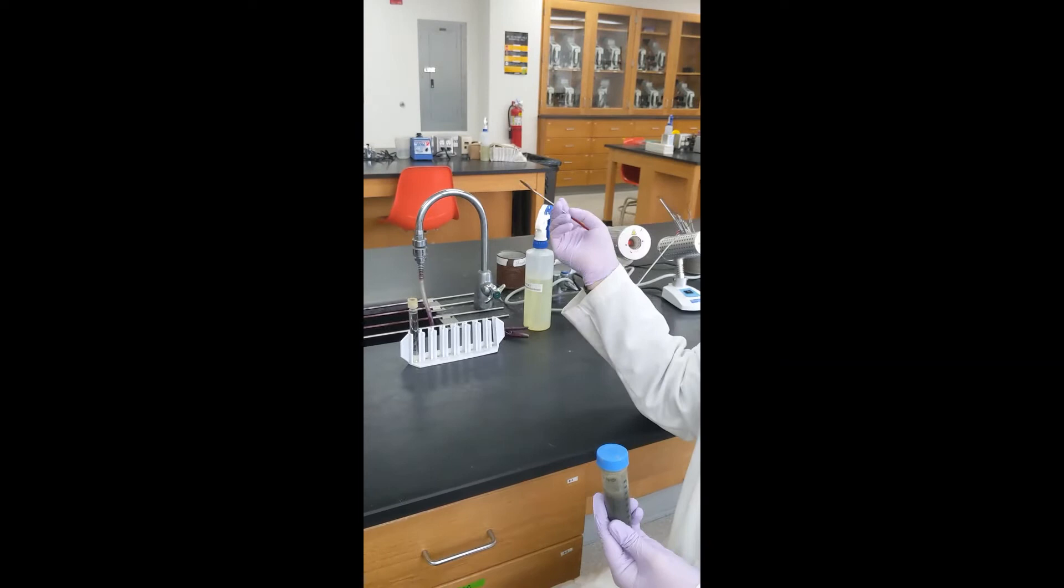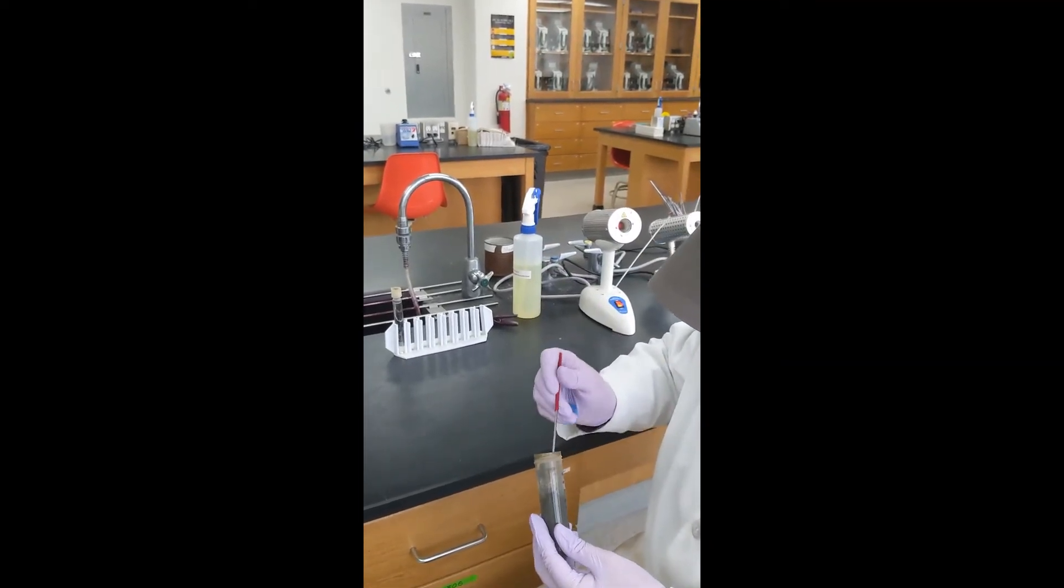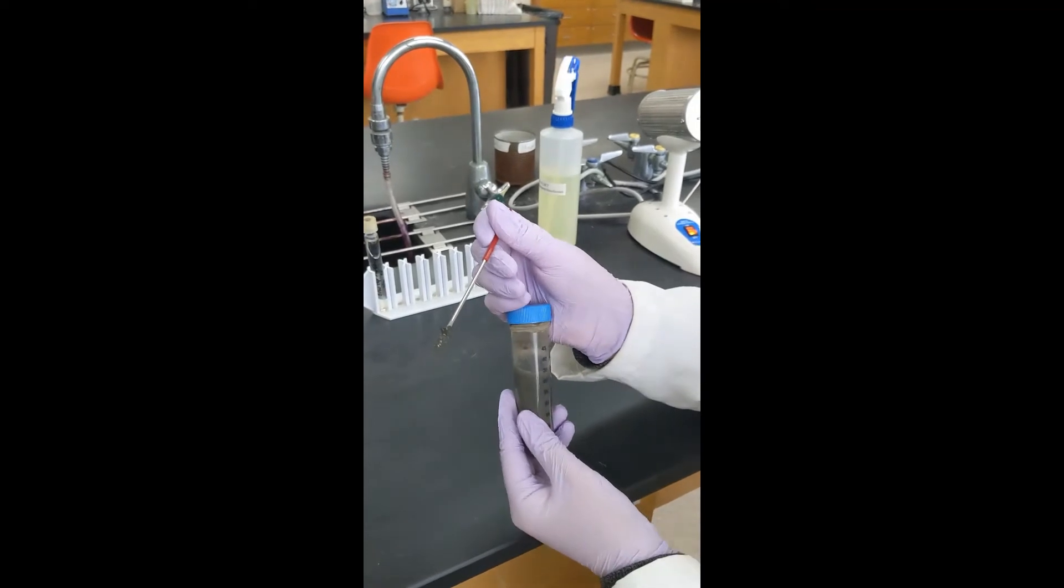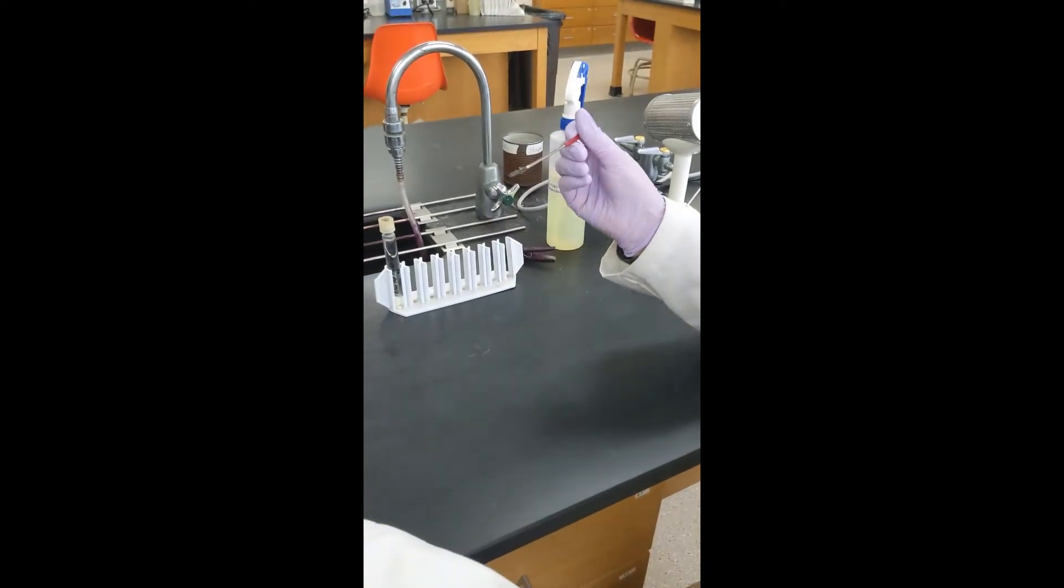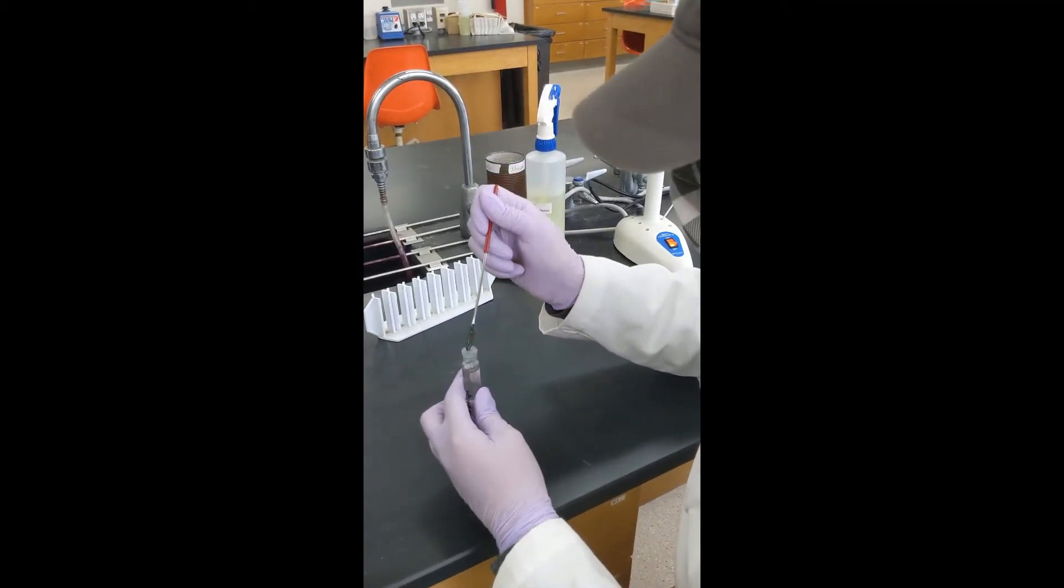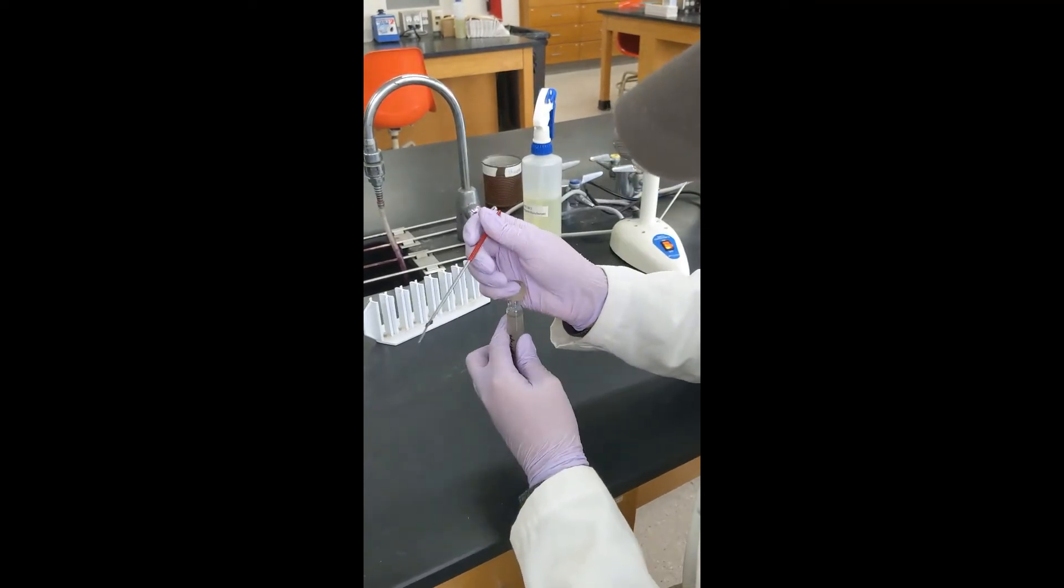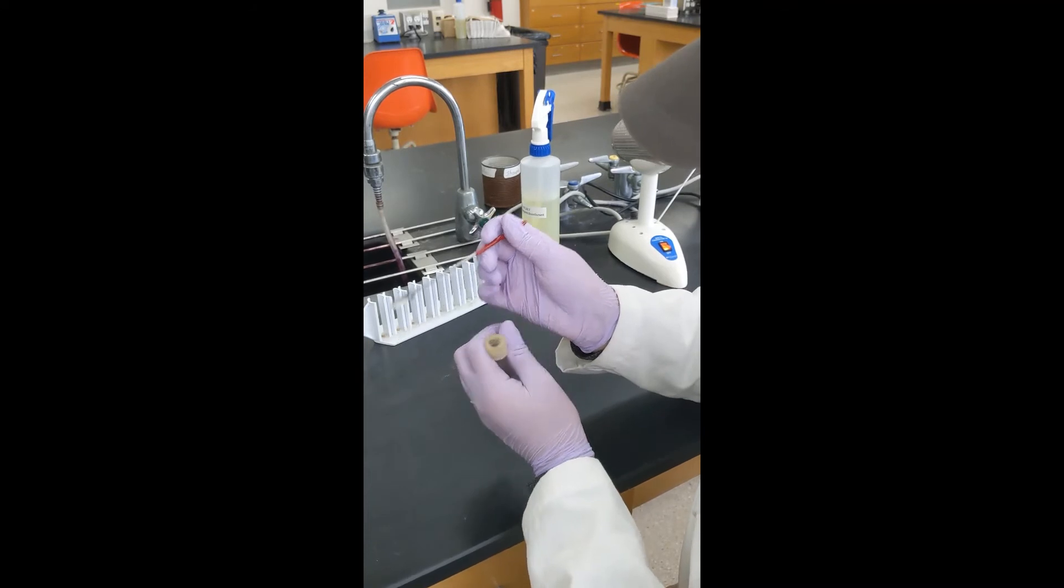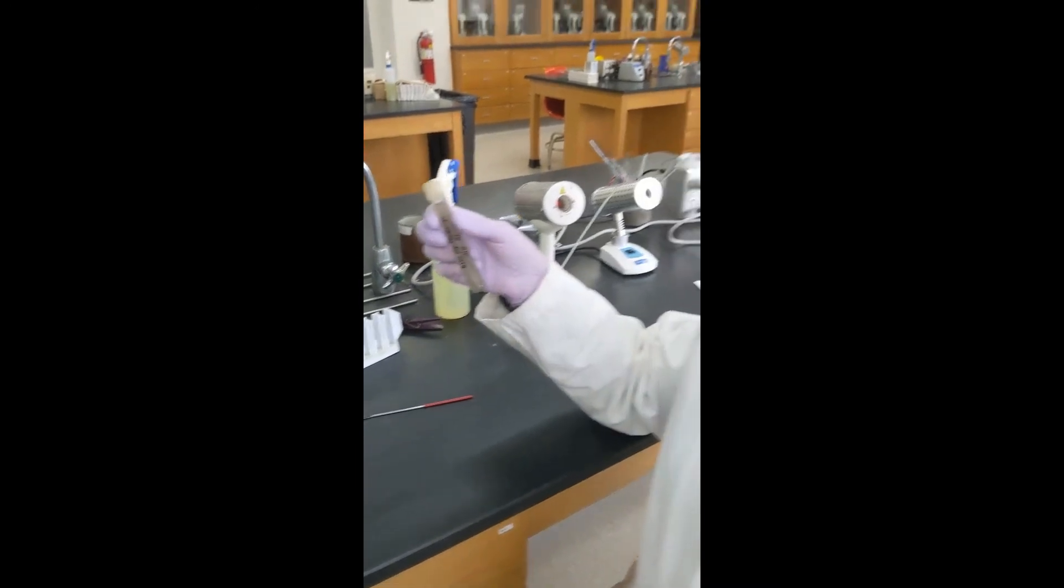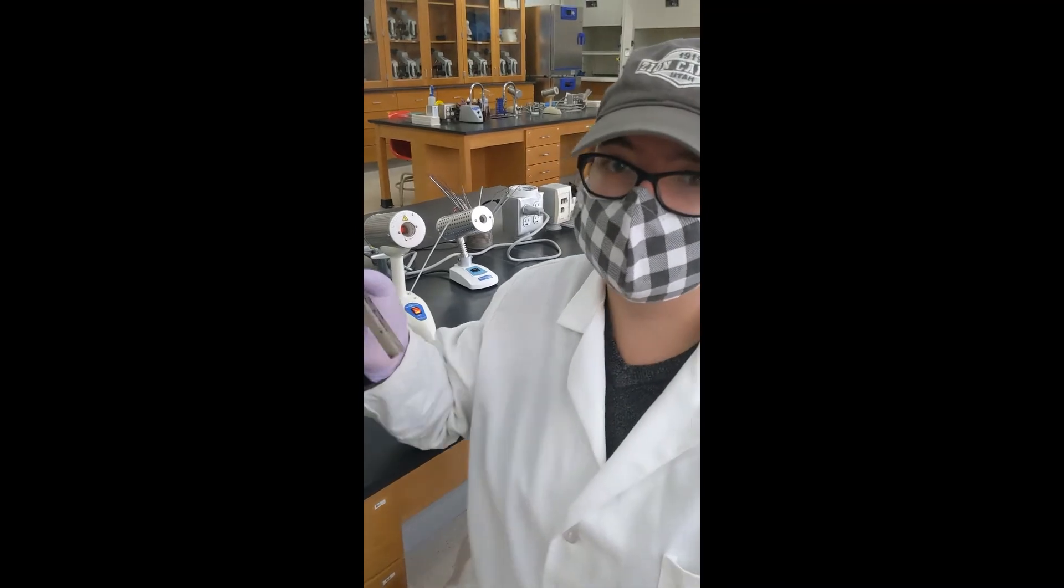So in order to get this set up, all we need to do is take a small amount of our lake sediment, probably just about that much, and stick it right in the tube of Omerod's media, close it up, and invert it to mix it. Then we will take this over to our light setup and let it incubate at room temperature for about two weeks.